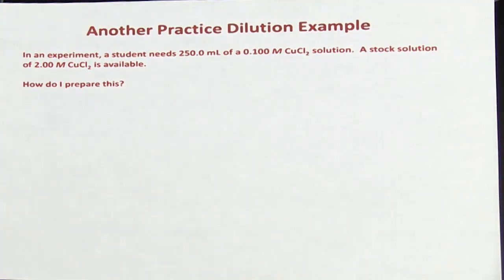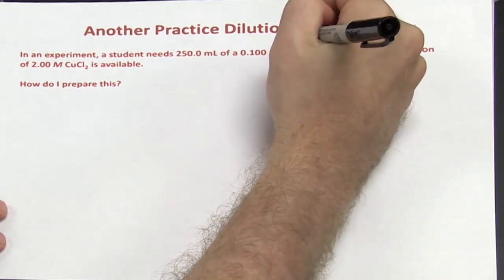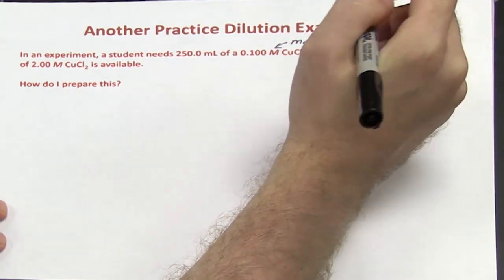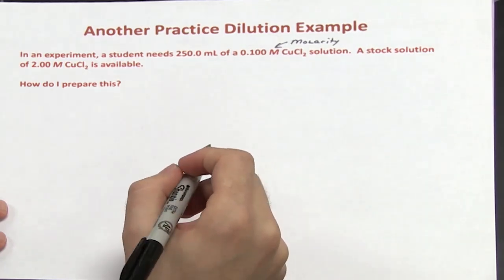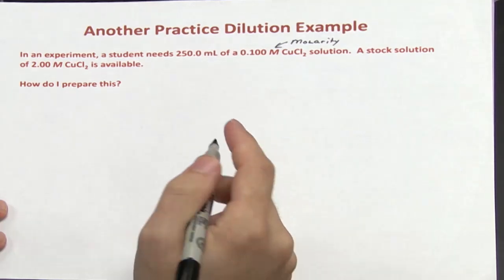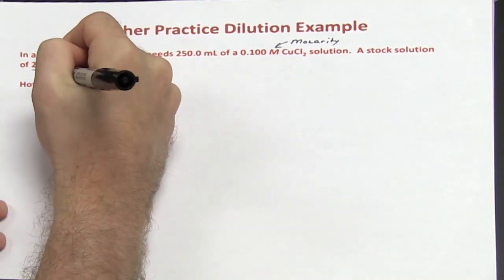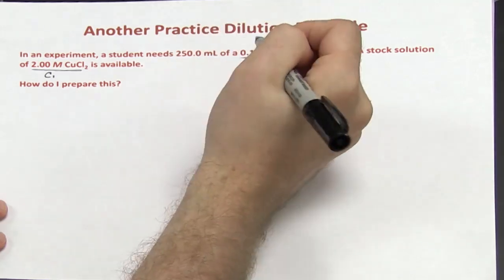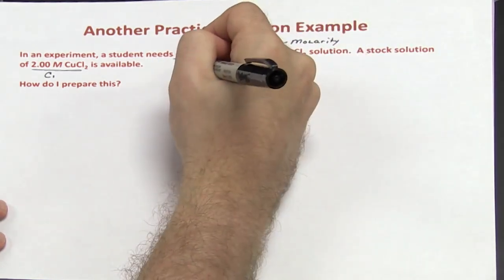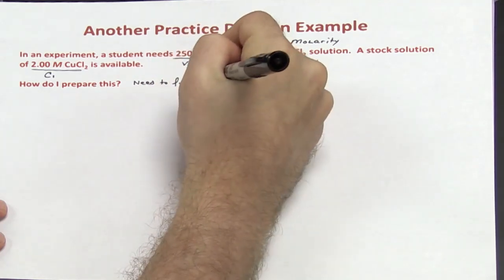Let's see how we can use that formula when setting up a dilution. A student needs 250 mL of a 0.1 molar solution — where capital M represents molarity, a unit used to describe concentration. A stock solution of 2 molar copper chloride is available. The stock solution is 2 molar, so this represents C1. The desired concentration, 0.1 molar, is C2, and the desired volume of 250 mL is V2. What I need to find is V1.